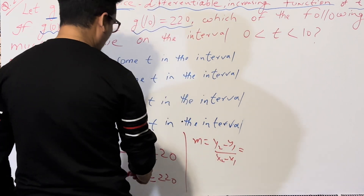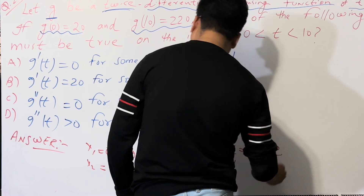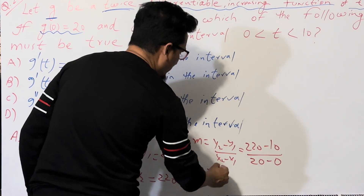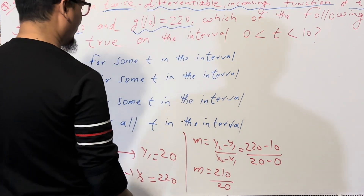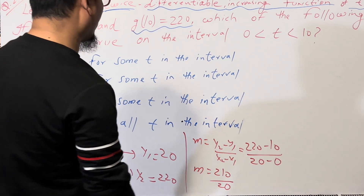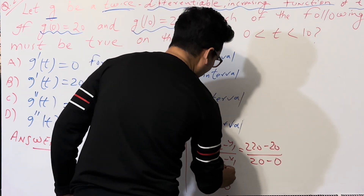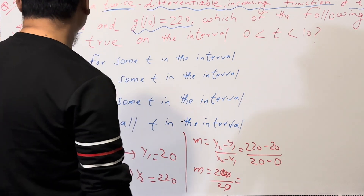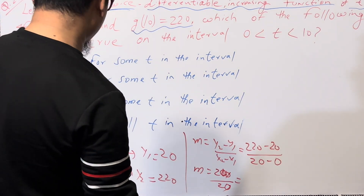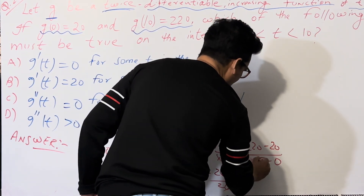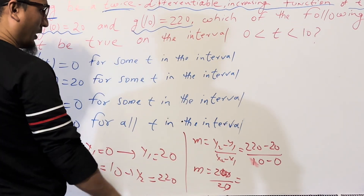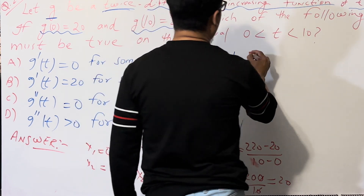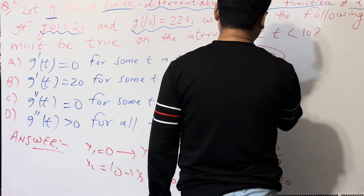We can find the slope: M equals (y₂ minus y₁) divided by (x₂ minus x₁), which is (220 minus 20) divided by (10 minus 0). So M equals 200 divided by 10, which equals 20. The slope M is equal to 20.